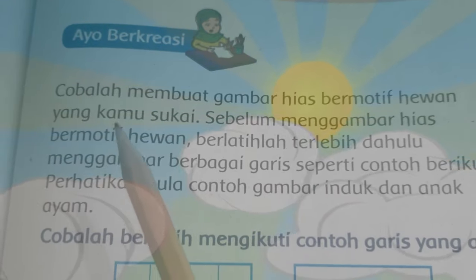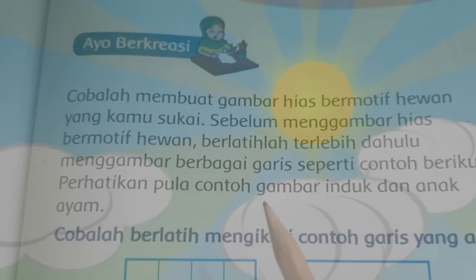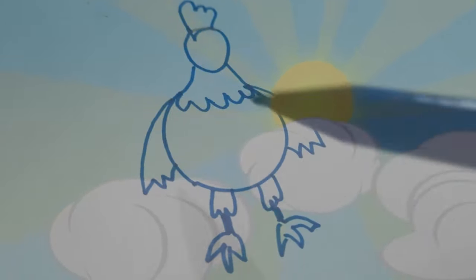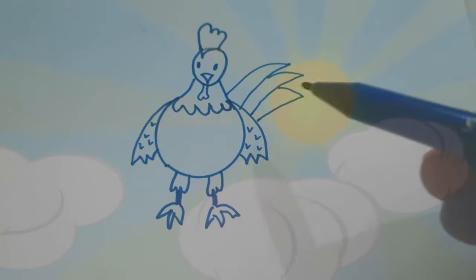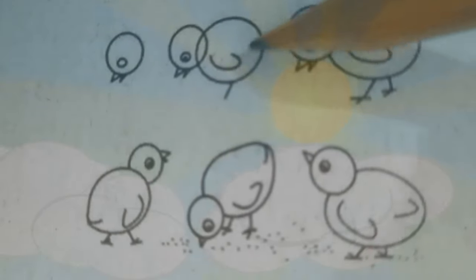Berikutnya, kita akan menggambar dengan hias bermotif. Cobalah membuat gambar hias bermotif hewan yang kamu suka. Tapi sebelum menggambar, kamu berlatih dulu, yaitu latih membuat garis seperti ini. Coba kalian tirukan garis-garis yang ada di buku. Kita akan membuat gambar ayam. Anak-anak, pertama buat lingkaran, setelah itu lingkaran yang sudah jadi diberi leher dan kepala, dan setelah itu diberi sayap, kaki, dan gambarlah ayam. Untuk berikutnya bisa mencoba gambar anak ayam seperti ini. Contohnya ada pada buku paket kalian dan bisa kalian coba di rumah.